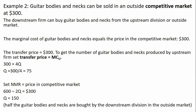The downstream division sets net marginal revenue equal to the competitive market price, resulting in the downstream division assembling and producing 150 guitars. Half of those guitar bodies and necks come from the upstream division, and the other half are bought by the downstream division in the outside competitive market.